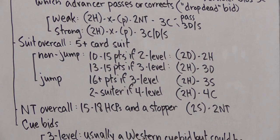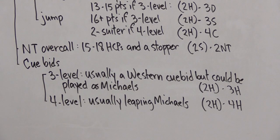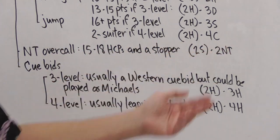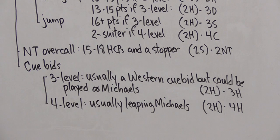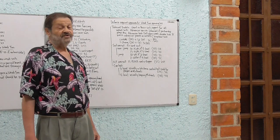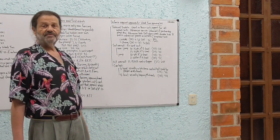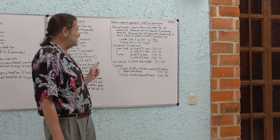We can also overcall no trump, which shows 15 to 18 high card points, two hearts, two no trump, and a stopper in their suit. Here's another example, two spades, two no trump. We're promising 15 to 18 high card points and spades stopped. What constitutes spades being stopped? That's a judgment call. Would you do it with ace, jack third? Maybe. Would you do it with just ace third? Maybe. I'd feel better with two stoppers, ace king or ace queen, but whatever you consider a stopper, you need to have it.